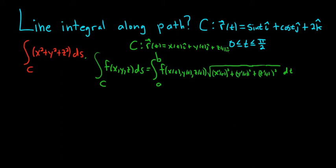So in this problem here, it's very similar to the formula. We already have x of t, so x of t is sine t, y of t is going to be cosine t, and then it looks like z of t is going to be 2.